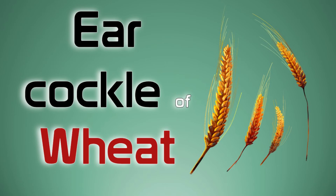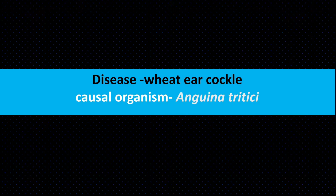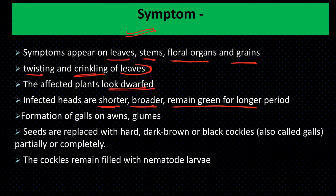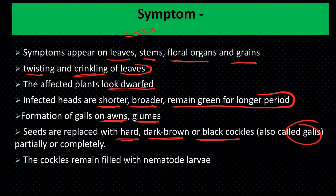Now let us look at ear cockle of wheat. The disease is caused by the nematode Anguina tritici. Symptoms appear on leaves, stems, floral organs, and grains. The nematode causes twisting and crinkling of leaves. The affected plant looks dwarf. Infected heads are shorter, broader, and remain green for a longer period. Galls form on awns and glumes, and seeds are replaced with hard, dark brown or black cockles (also called galls).